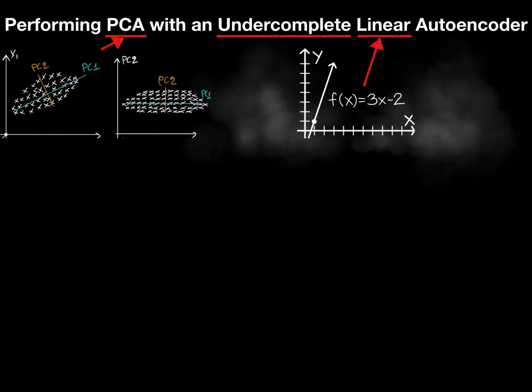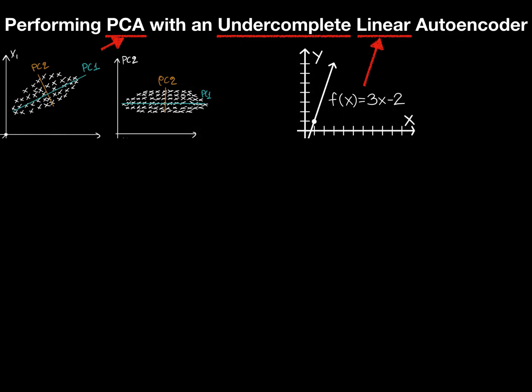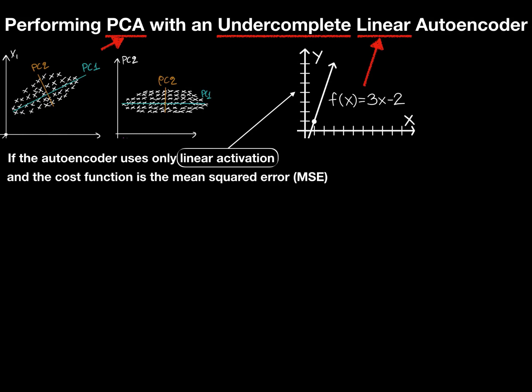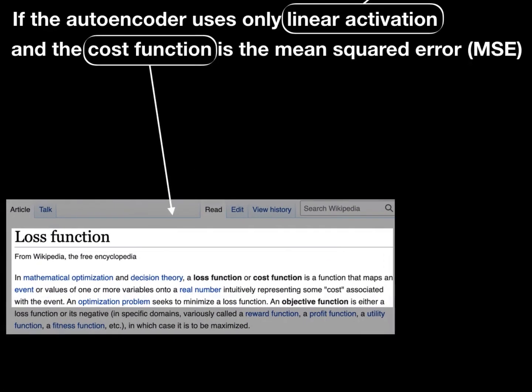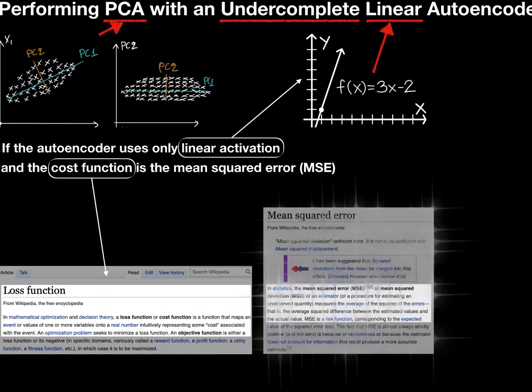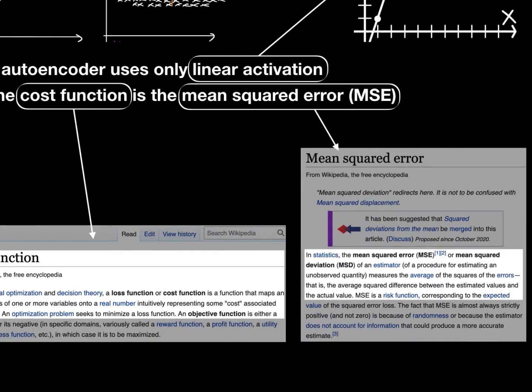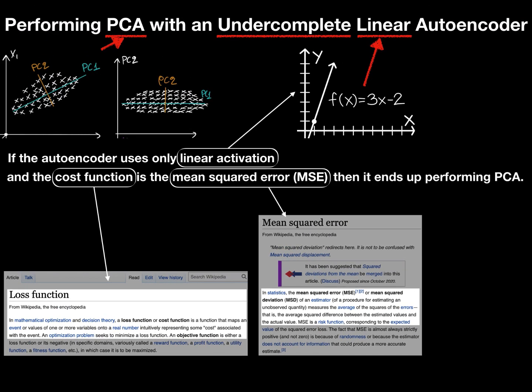And linear. This is when a neural network has a linear activation function to calculate output values. So the main key point here: if the autoencoder uses only linear activation and the cost function is the mean square error, it is MSE. Before ending this sentence, remember, what is the loss function? This is a function that maps an event or values of one or more variables into a real number, intuitively representing some cost associated with the event. And an optimization problem seeks to minimize a loss function. Mean square error, or MSE, calculates the average of the squares of the error, that is, the average squared difference between the estimated values and the actual value. Then this scenario ends up performing PCA.